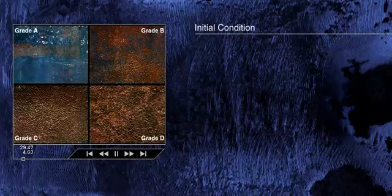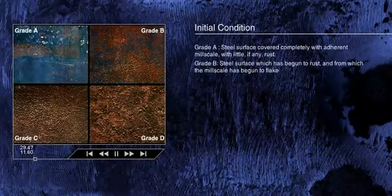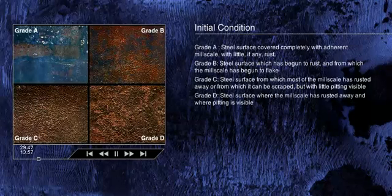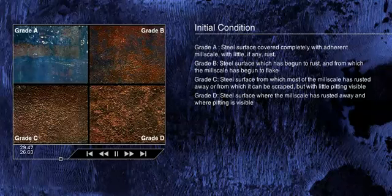The user should take account of the initial condition of the steel surface before cleaning, defined by ISO and SSPC as grades A, B, C, or D. Photographs are provided for each degree of surface preparation based on the initial condition. The appearance of the surface after cleaning will differ depending on the initial condition of the steel.